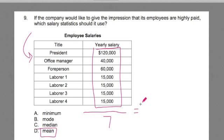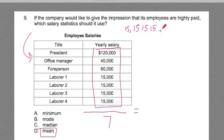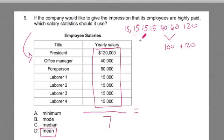If we were to pay everyone equally, that would be the average. It's helpful to order the numbers from least to greatest, which will also help when finding the median. So we have: 15,000; 15,000; 15,000; 15,000; 15,000; 40,000; 60,000; and 120,000. Then 40,000 plus 60,000 is 100,000, plus 120,000, and 15,000 times five is 75,000 — wait, 15 plus 15 plus 15 is 60. Adding these up gives 280,000.